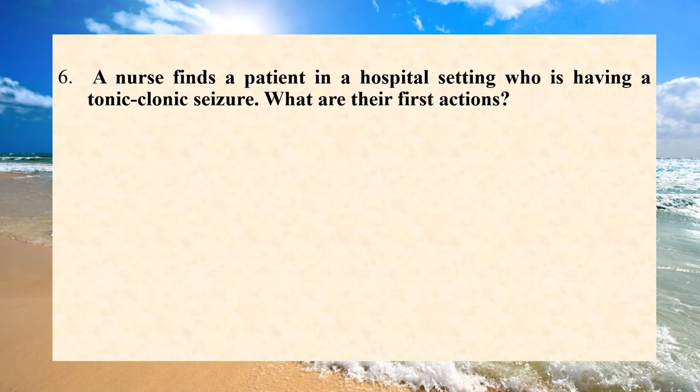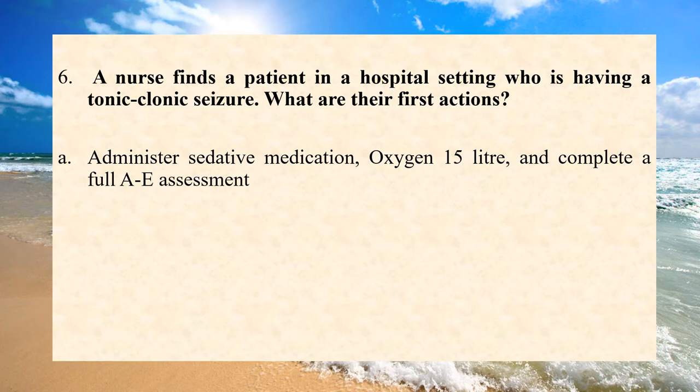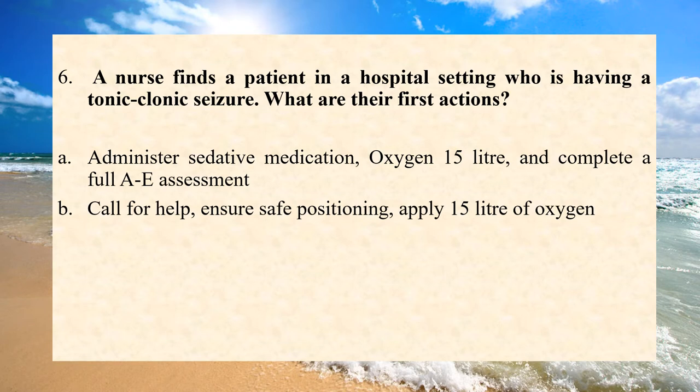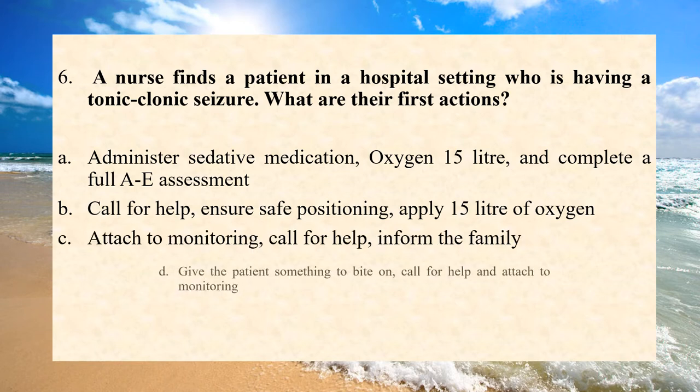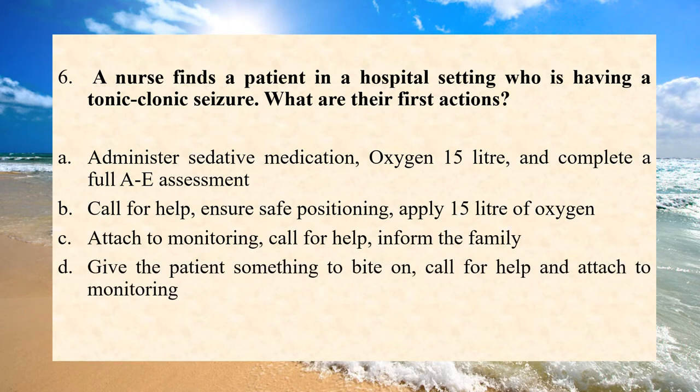A nurse finds a patient in a hospital setting who is having a tonic-clonic seizure. What are their first actions? A. Administer sedative medication, oxygen 15 litres and complete a full A&E assessment. B. Call for help, ensure safe positioning, apply 15 litres of oxygen. C. Attach to monitoring, call for help, inform the family. D. Give the patient something to bite on, call for help and attach to monitoring.